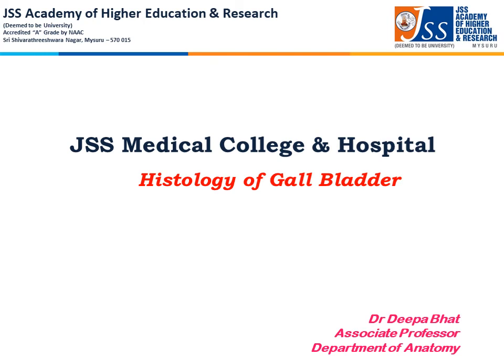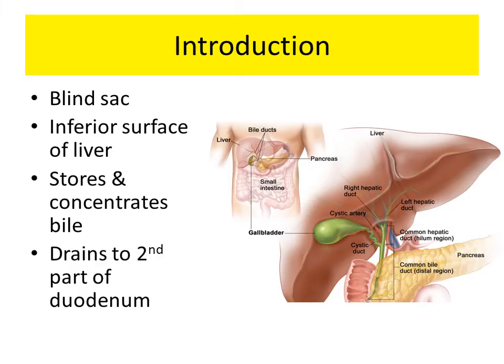Welcome to DB Anatomy. Today let us study the histology of the gallbladder. The gallbladder is a blind sac located on the inferior surface of the liver. It concentrates and stores the bile, which from here drains into the second part of the duodenum.